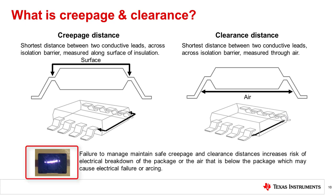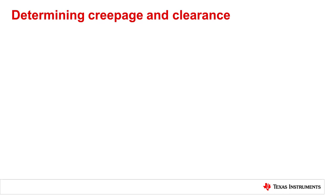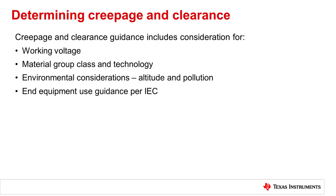Arcing is a phenomenon caused by charge buildup and is especially a concern with higher operating voltages applied continuously over time. The creepage and clearance guidance includes considerations for working voltage, device material classifications, and several environmental conditions such as altitude and pollution ratings. We will take a quick look at the relationship between these factors and give some brief guidance on how to determine the correct creepage and clearance needed for your isolator.